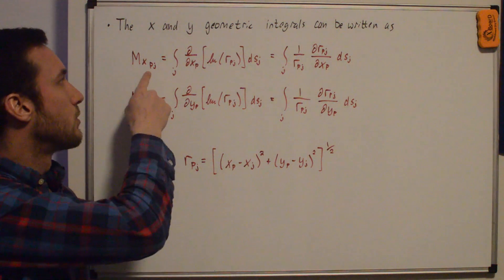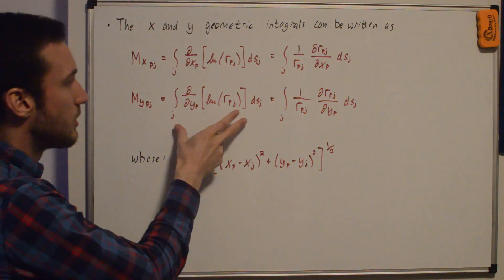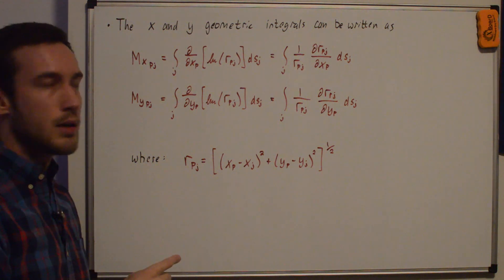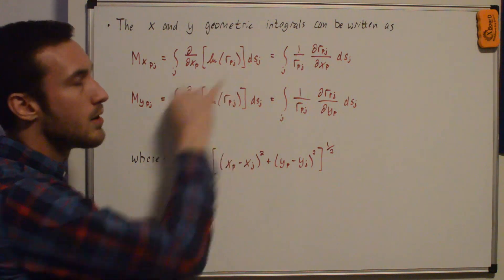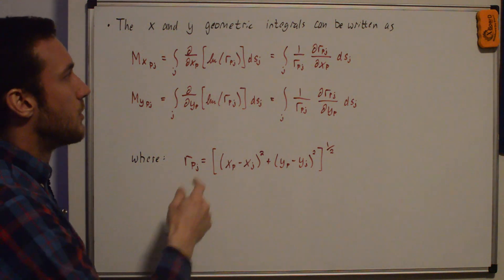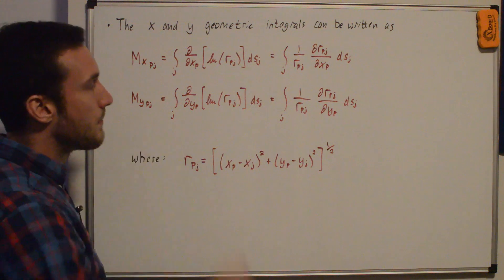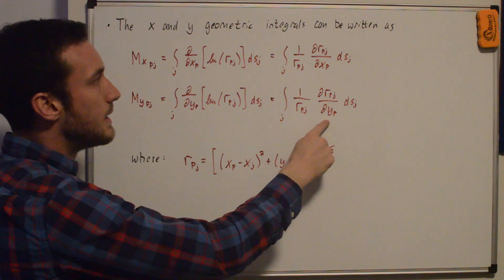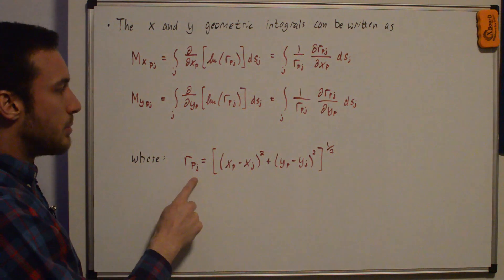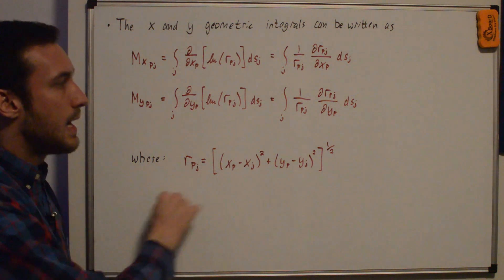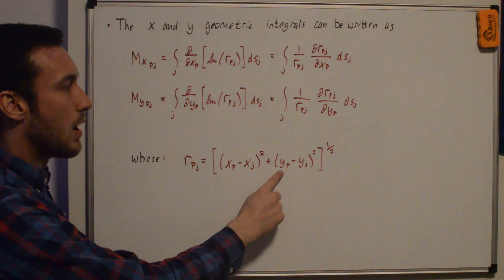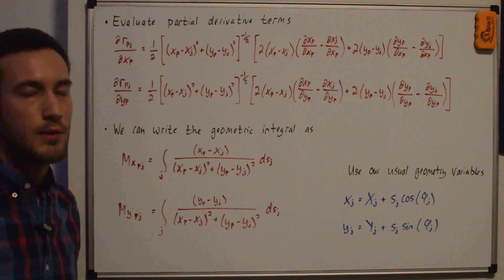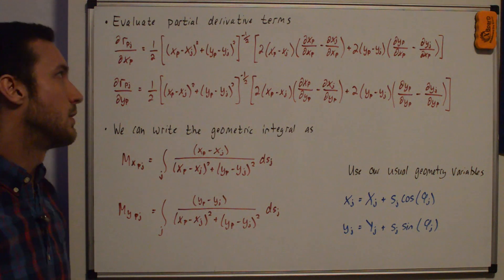We can write the geometric integrals MXPJ and MYPJ by taking just the integral, the same as written from the previous whiteboard. Based on the same approach used to evaluate the partial derivative in my IIJ video, we get 1/RPJ · DRPJ/DXP for the X component and 1/RPJ · DRPJ/DYP for the Y component, where RPJ is the distance between point P and point J on that panel. After taking the derivative of the natural log, we still have a partial derivative to evaluate due to the chain rule.